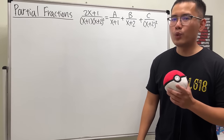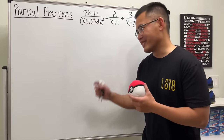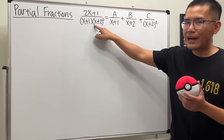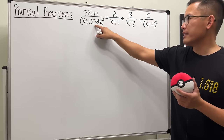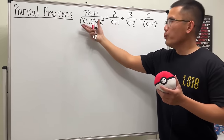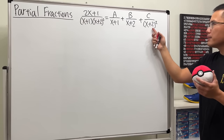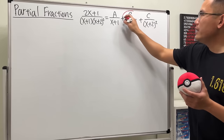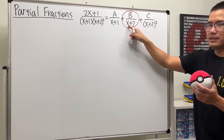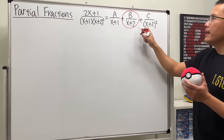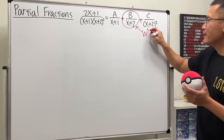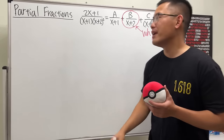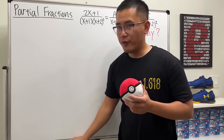I'm going to answer the biggest 'why' when we are doing partial fractions. Take a look at the case when we are dealing with a big fraction like this, when we have a repeating factor on the bottom. Let's take a look at (x+2) squared. We see the (x+2) squared right here, but why do we also need to put down (x+2) to the first power? This is perhaps the biggest why when doing partial fractions.